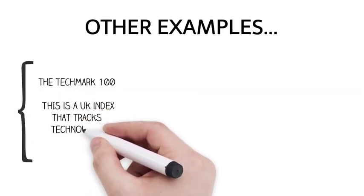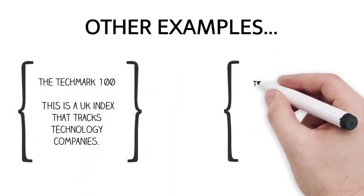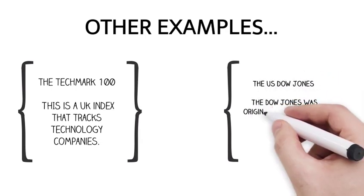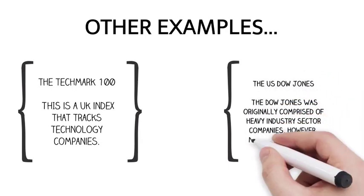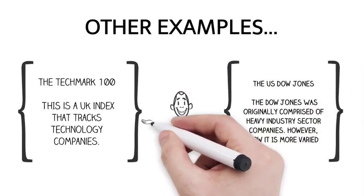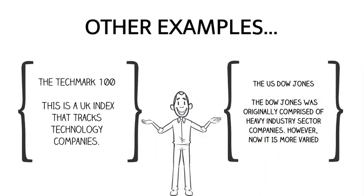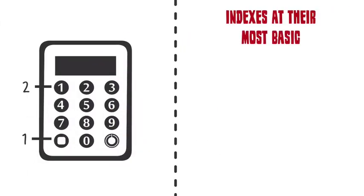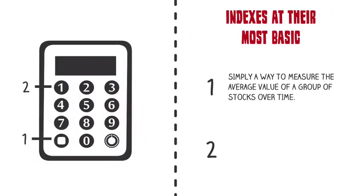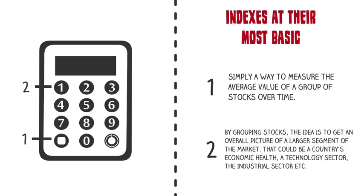Let's look at a couple more examples. The Techmark 100 is a UK index that tracks technology companies. The US Dow Jones was originally comprised of heavy industry sector companies, however now it is more varied. So indices, at their most basic, are simply a way to measure the average value of a group of stocks over time. By grouping stocks, the idea is to get an overall picture of a larger segment of the market — that could be a country's economic health, a technology sector, the industrial sector, etc.